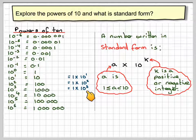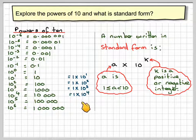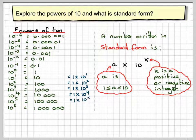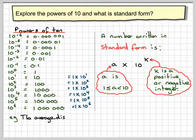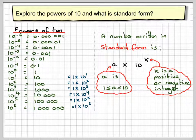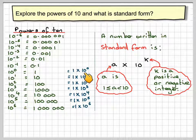1 times 10 cubed, 1 times 10 to the 4, 1 times 10 to the 5, and 1 times 10 to the 6. Going backwards, we get 1 times 10 to the 0.